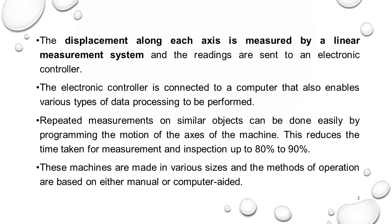Some industries use a very small compact type, but companies like car manufacturing industries such as Hyundai use big machines, because the overall dimensions of the car — door-to-door distance, front-to-back distance — everything is measured with the help of CMMs. Methods of operation include manual or computer-aided.